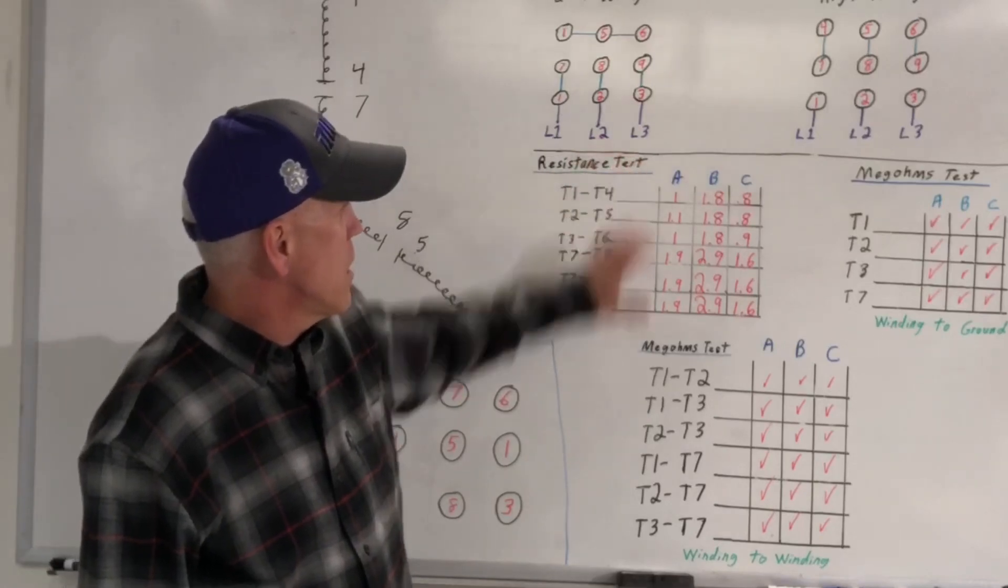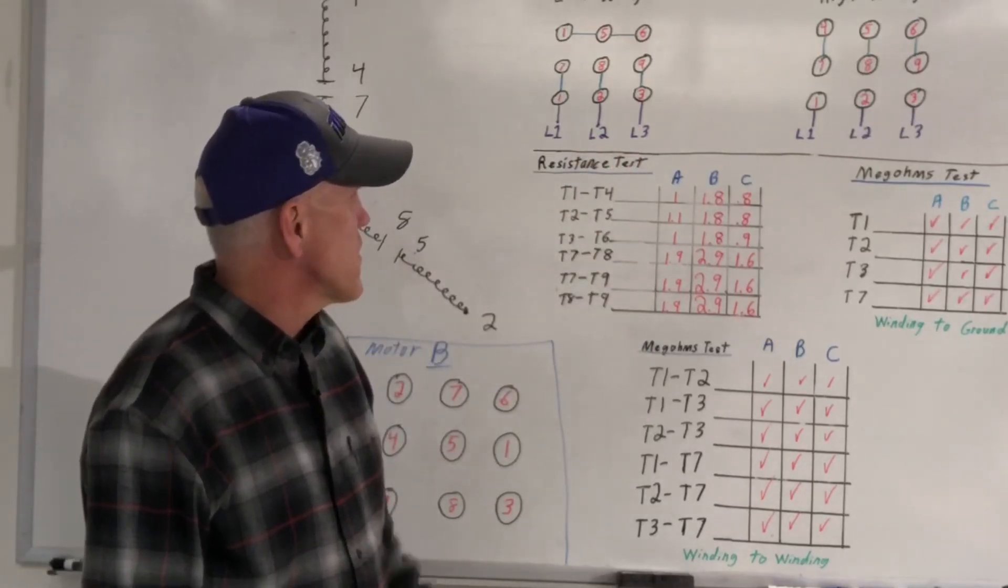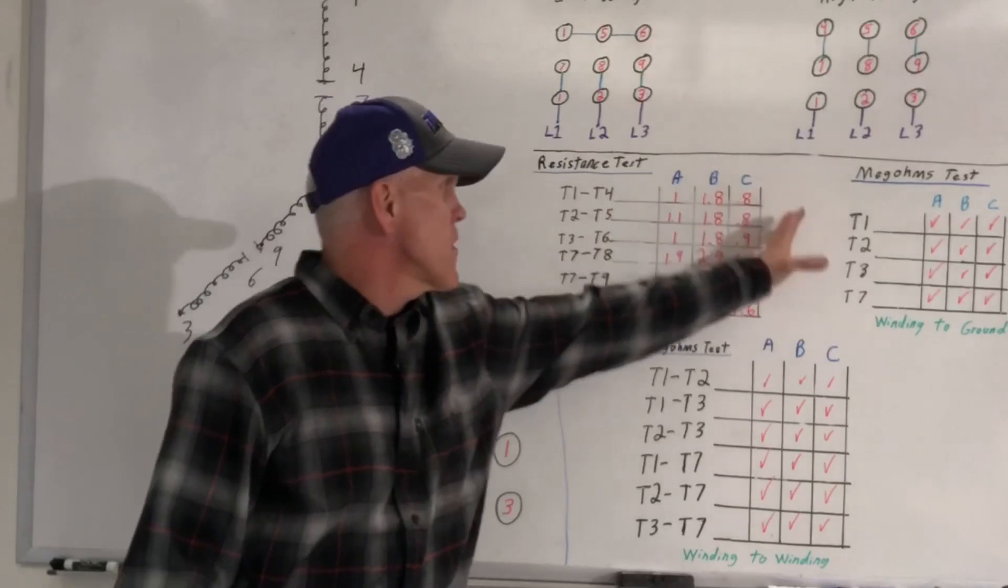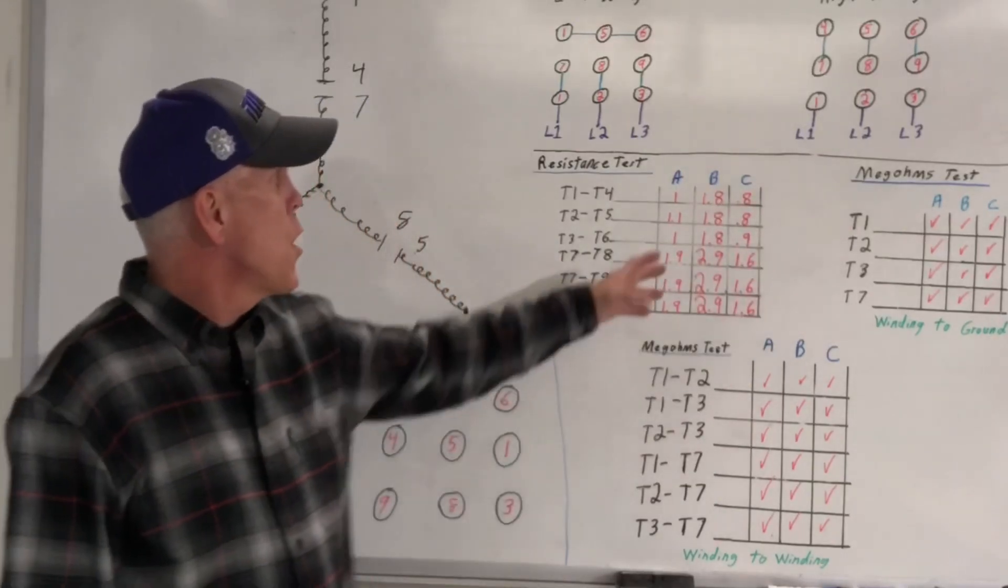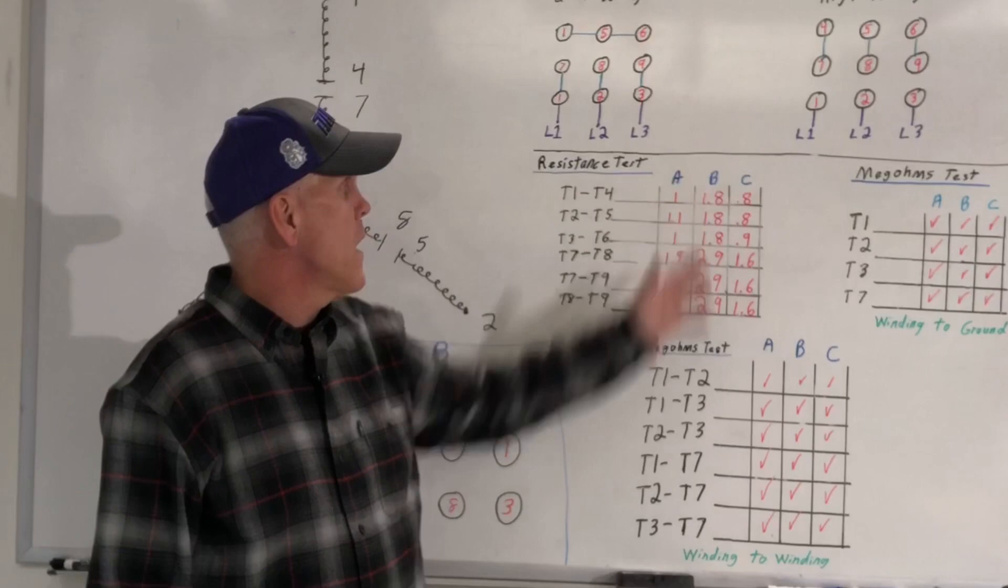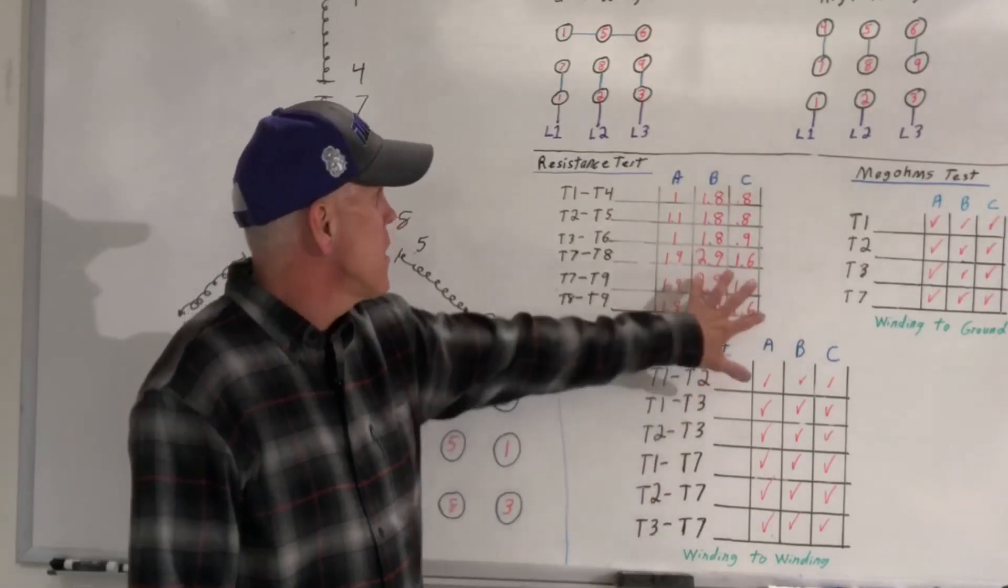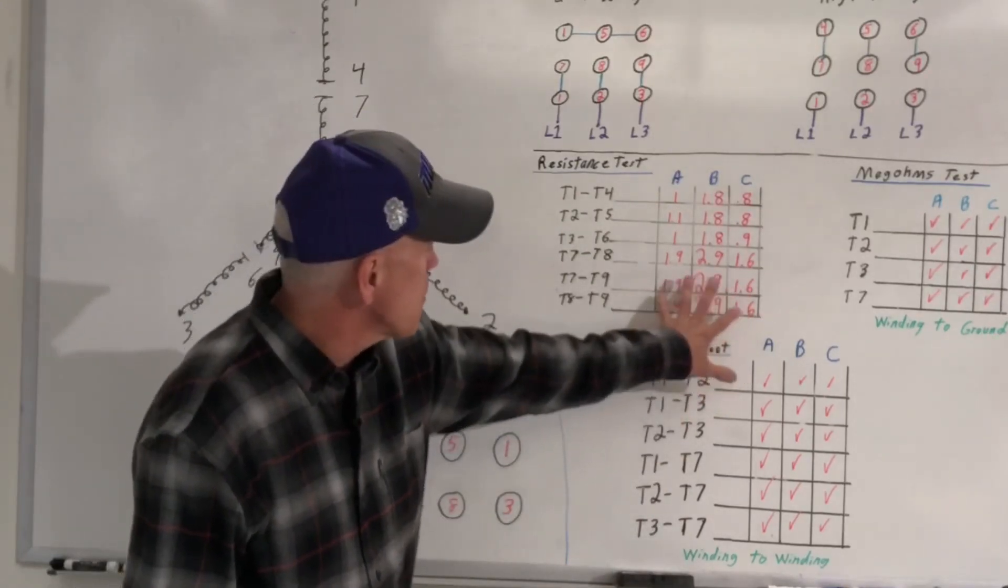Motor A, all the resistance tests look good on that. Motor C resistance test looks good on that. Motor B, the resistance test on that was higher than the other two motors. The other two motors within range.